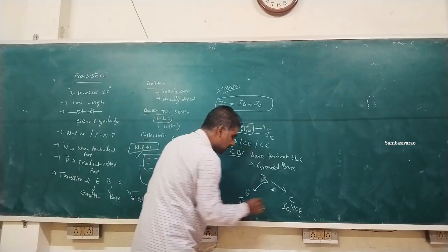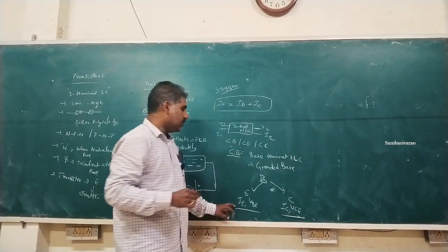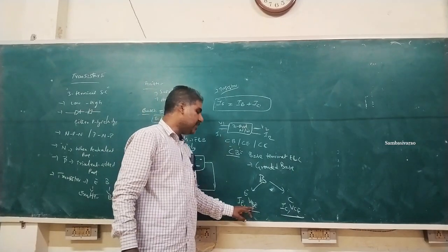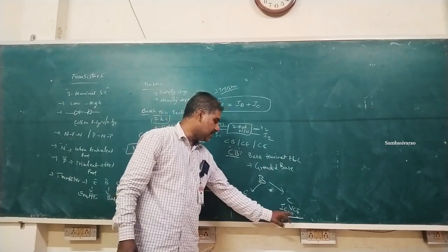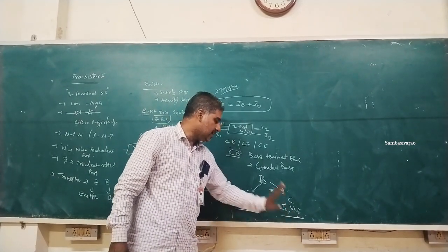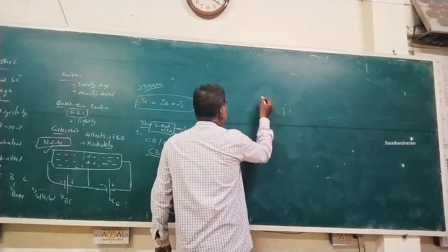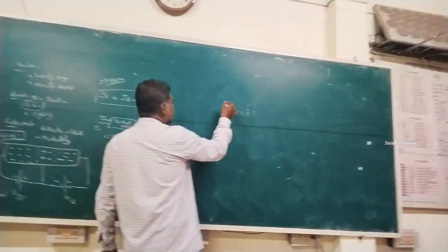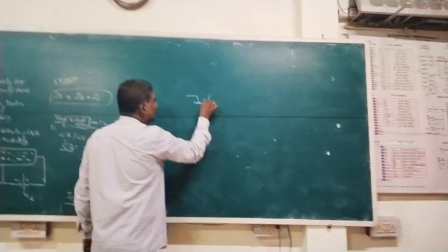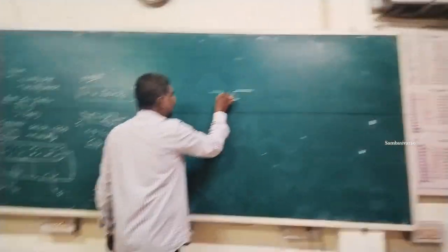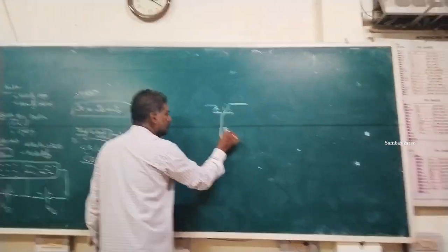The input terminals are IE (emitter current) and VBE (base-emitter voltage). The output terminals are IC (collector current) and VCB (collector-base voltage). In the circuit, the base terminal is common to both emitter and collector and is grounded.